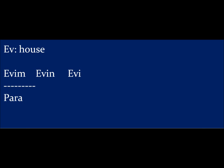Now, in one case — and only one case — we add the consonant S instead, and that is the possessive form. If we look at 'ev' (house): 'evim' is my house, 'evin' is your house, 'evi' is his house. No problem there. However, if the word ends in a vowel, like 'para,' then: 'param' (my money), 'paran' (your money), 'parası' (his/her/its money). We add S here, but only when we say his, her, its, or their something, and that something ends in a vowel.